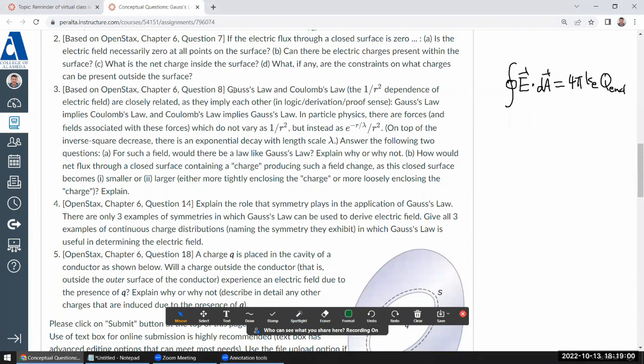So it's really, this question is getting at what Gauss's law means and what it doesn't mean. Gauss's law puts certain restrictions on what kind of things can happen and it doesn't place restrictions on certain things. All these parts are trying to get at the details of that. So question three, Gauss's law and Coulomb's law are closely related. Yeah, there are forces. There's a lecture I do for physics for C called Yukawa method, where the consideration for that was a force falling off like that Yukawa type potential. On top of the inverse square. And so the following two questions, for such a field, would there be a law like Gauss's law? The simple answer is no.